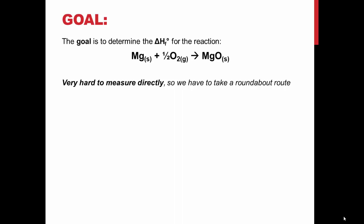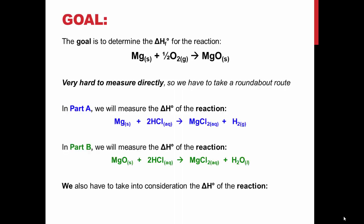Enthalpy is a state function so it is independent of the steps used to get from reactants to products as long as they begin and end in standard state conditions. This allows us to use a series of reactions to find the overall enthalpy change and formation of magnesium oxide. Combining the three reactions shown on the slides will give us the overall reaction we want to look at.